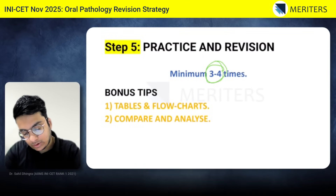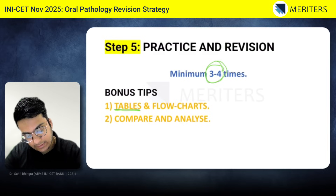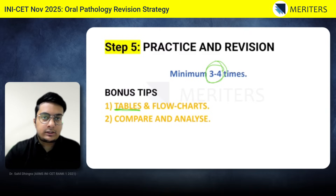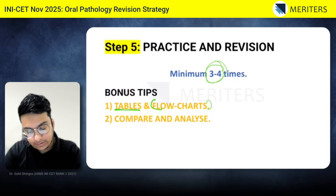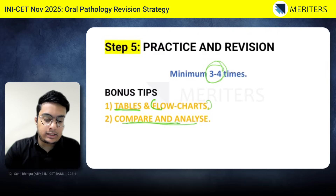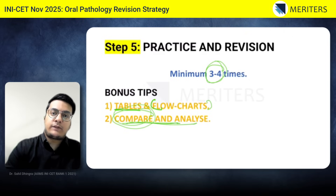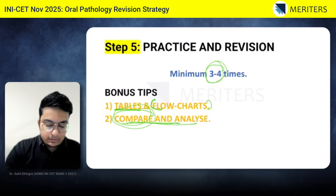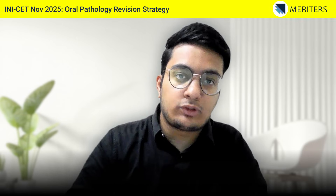Next is revision and practice. This is a very theoretical subject, so give at least three to four revisions. The bonus tip: for oral pathology, read in tabular format so you know which feature is present in a particular syndrome but absent in another. Focus on flowcharts for pathogenesis, and compare and analyze various diseases and syndromes — only then will you retain the information long-term. The goal is to focus on category one (developmental disorders), then bone, joint, neuromuscular and skin disorders, followed by extra cover, and finally infections and pigmentations.